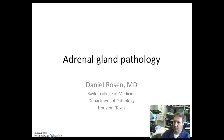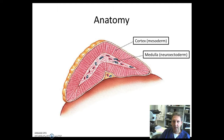Hello, my name is Daniel Rosen and I'm a pathologist at Baylor College of Medicine in Houston, Texas. Today we're going to talk about adrenal pathology. The anatomy of the adrenal gland is a retroperitoneal structure containing its own subcompartment in the Gerota's fascia, usually measured 5 by 3 by 1 cm.